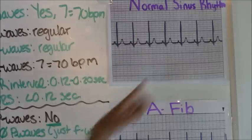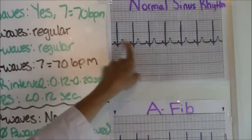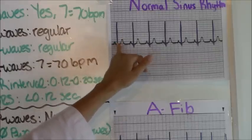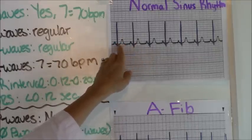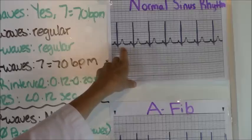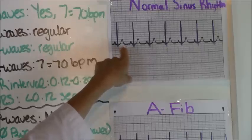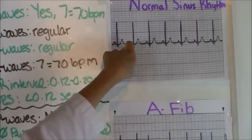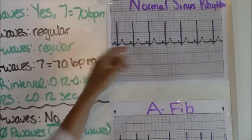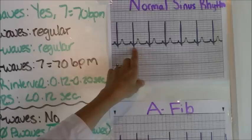So our ventricular rate is 70 beats per minute. We also want to count from the beginning of the P wave to the beginning of the QRS to get our PR interval. Our interval is about 0.12 seconds, and you want your interval between 0.12 to 0.20 seconds, so that's a normal PR interval. And our QRS complex is very narrow, definitely less than 0.12 seconds.